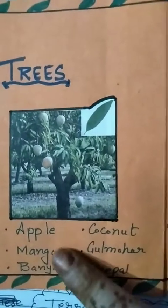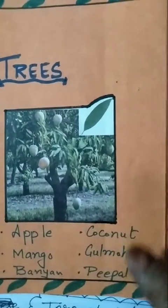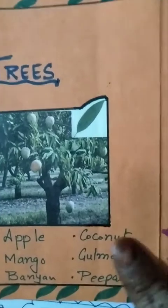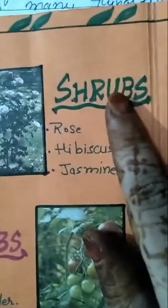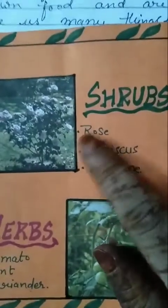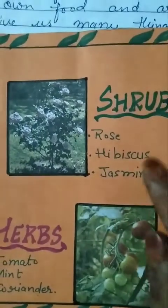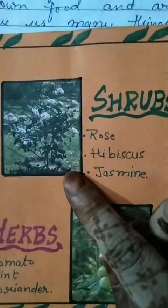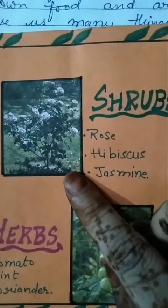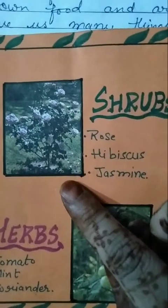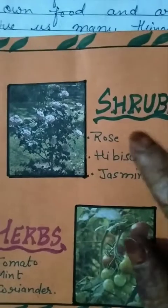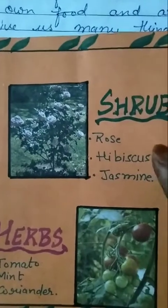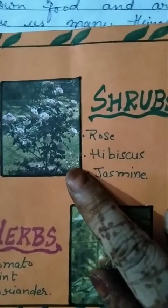Trees are very strong and tall plants. They can live for many years. Apple, mango, pine, and coconut are examples of trees. The second kind is shrubs. Shrubs are smaller than trees. They have woody and hard stems. Rose, hibiscus, and jasmine are examples of shrubs.